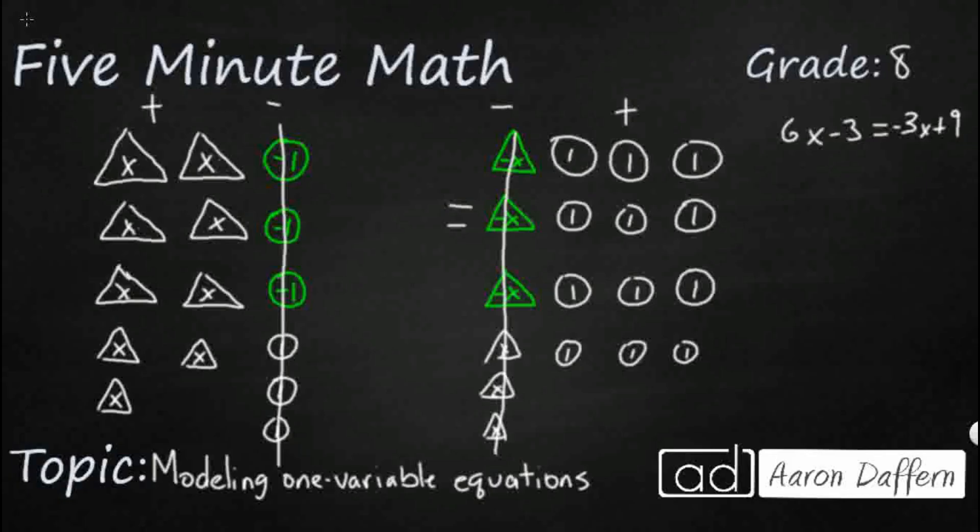Remember what I did first. I added 3x to both sides. It stays balanced as long as you do the same thing to both sides of the equation. So this is going to be 9x minus 3. Those two cancel each other out. Equals 9. And if only we didn't have the minus 3 on the left side, it'd be a nice, easy solution. But alas.